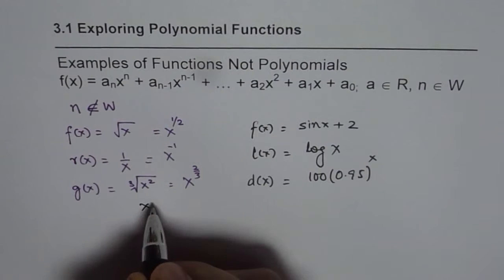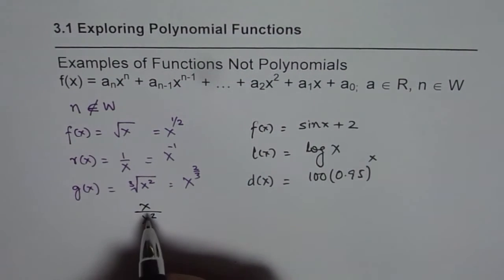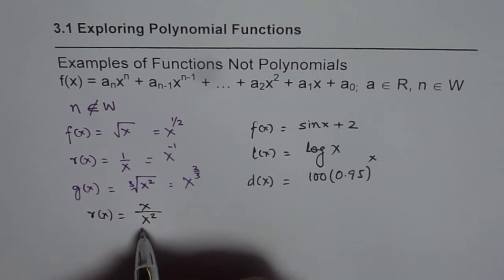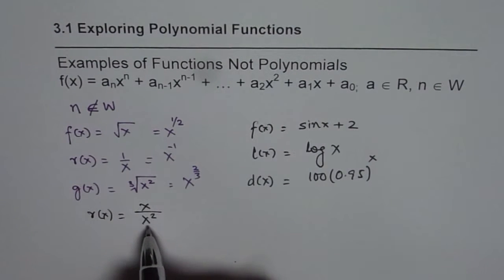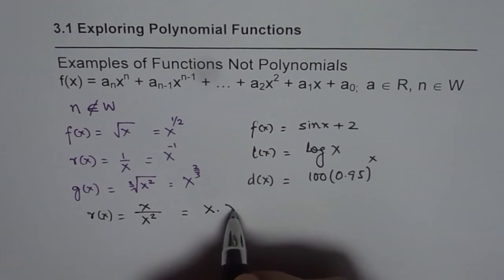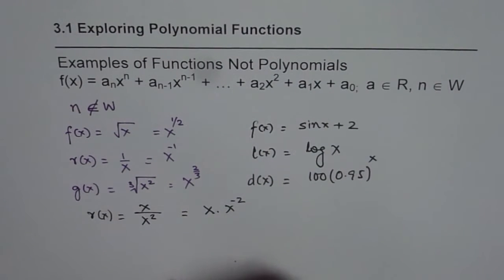For example, if I divide a polynomial x by x square, then this is a rational function, it is not a polynomial. Since that 2 in the denominator is as good as saying x times x to the power of minus 2. Now that minus 2 is not allowed. Do you see that?